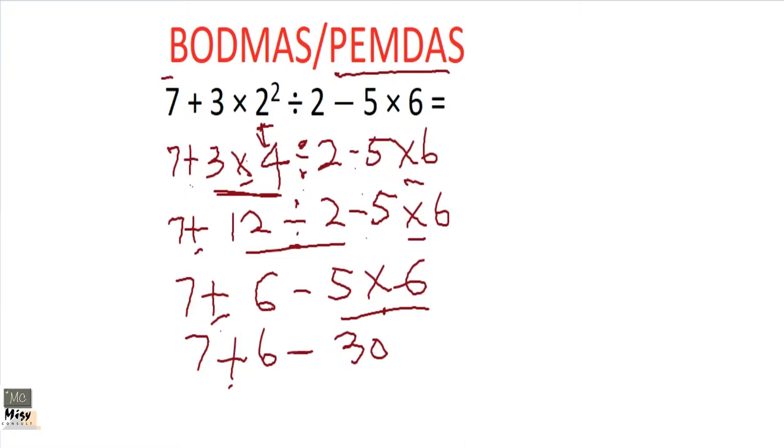Then we are left with two operations: the addition sign and the subtraction sign. But for them, they are the same level—addition or subtraction—so whichever we meet first on the left, we'll do it before we move to the next one. So 7 + 6, we get 13 - 30, which will give us -17.